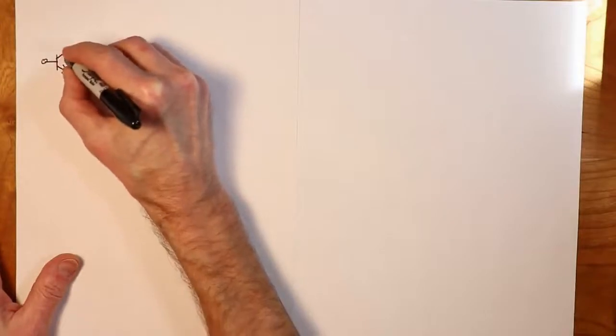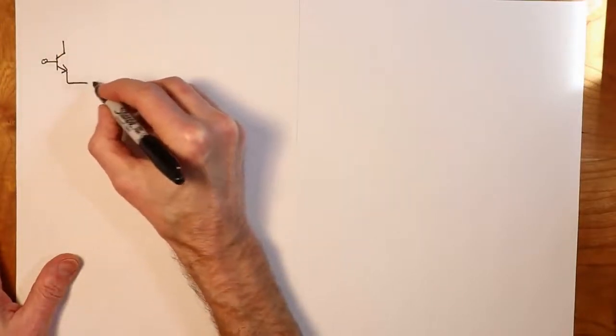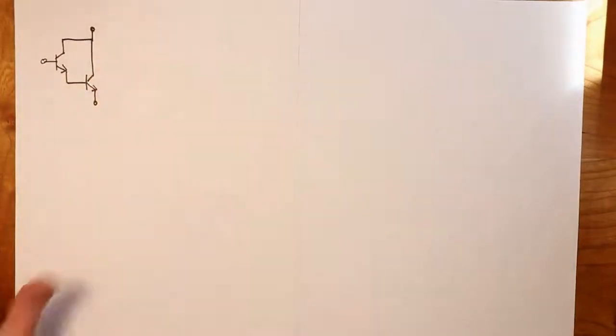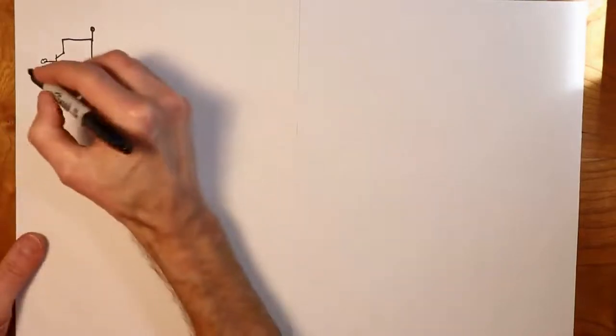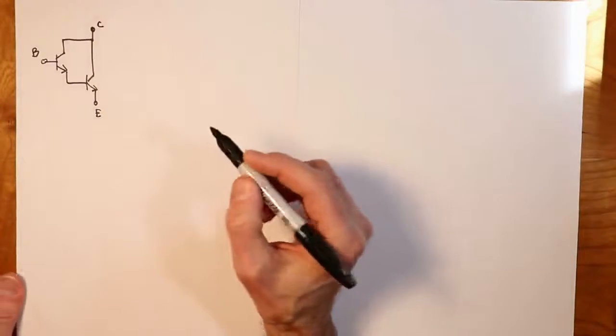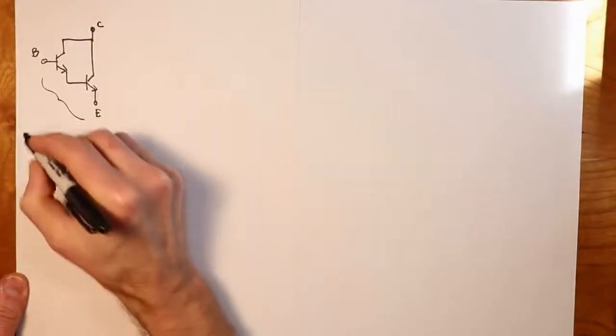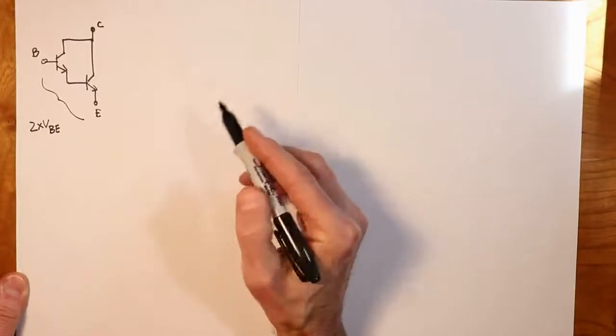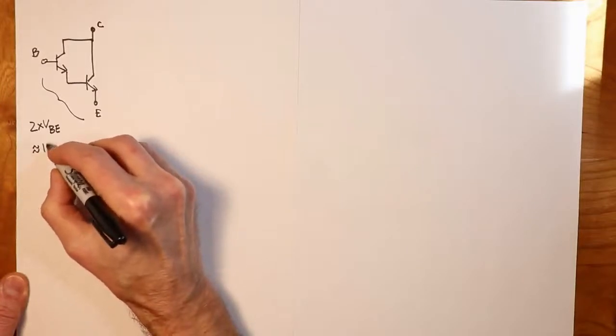The Darlington pair was invented by Sydney Darlington, an American electrical engineer in 1953. Essentially what it does is it feeds one transistor into another. We start with one transistor, and the emitter of this transistor is going to be hooked into the base of a second transistor. The two collectors are tied together. You think of this as one big composite transistor with the base, emitter, and collector. What should be immediately apparent is that you have two VBEs here. So instead of the usual 0.7 volts for a silicon transistor, you will see around 1.4 volts for the two of them.